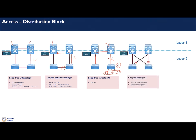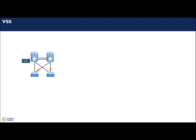The final topology is the loop triangle. Since there is a loop with Layer 2, we rely on spanning tree protocol. Two links are blocked, meaning we don't fully utilize those links, but on the other hand convergence is faster — hosts on this switch will hit the STP root within one hop instead of two hops as in previous designs.